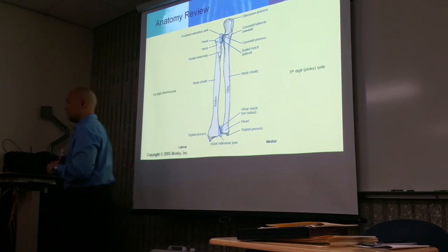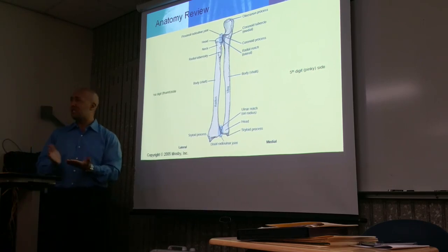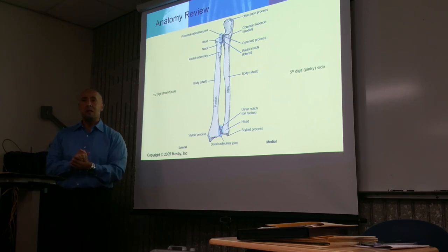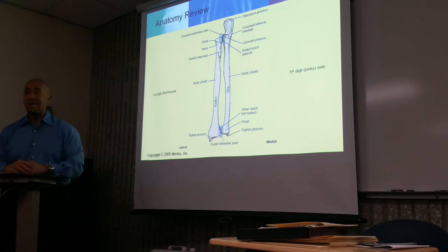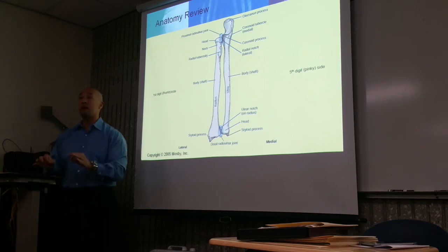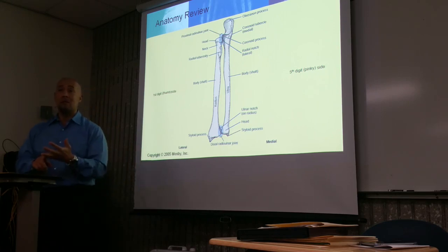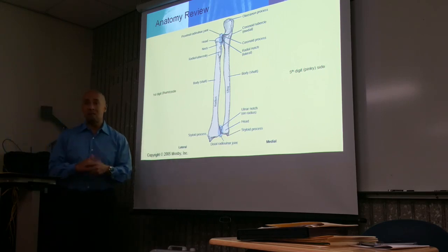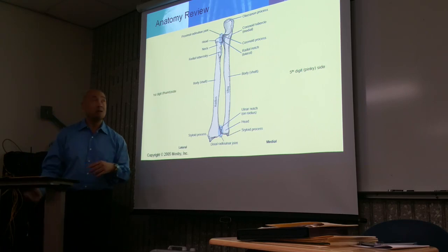What is the purpose of the tuberosity? Did you guys look at your definitions? It's the attachment of ligaments or tendons. Most bony anatomy is smooth, but in areas where it is raised or rough, that's where we have attachment for ligaments or tendons. So the radial tuberosity is an attachment for either a ligament or a tendon.